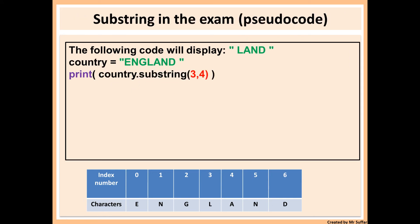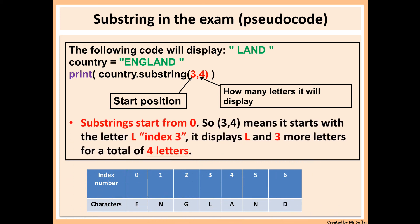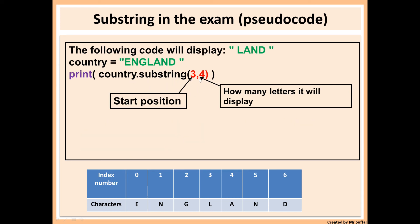In pseudocode it's slightly different. When using substrings in pseudocode, the first number represents the start position — exactly the same as Python. But the second number represents how many characters it will display. For example, starting at position three of 'England' which is L, and then four letters: L, A, N, D — so this displays 'land.' In pseudocode they use a comma instead of a colon. In Python we use colons normally.